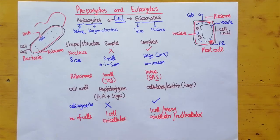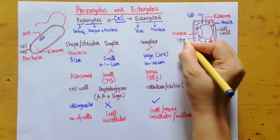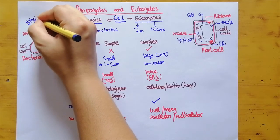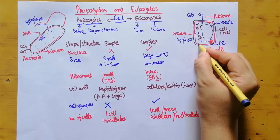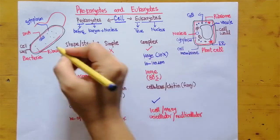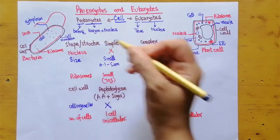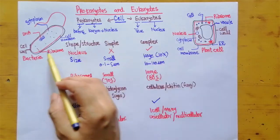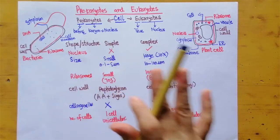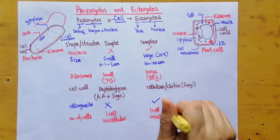There are also some similarities between both groups. For example, they both have cytoplasm, both have a cell membrane, ribosomes are present in both groups, and DNA is present in both groups. So while there are small similarities, there are many more differences between prokaryotes and eukaryotes.